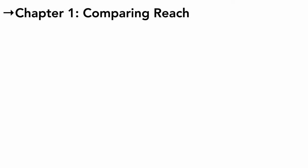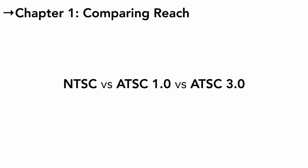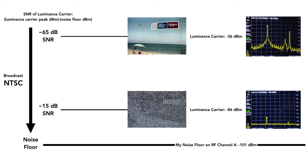Let's compare the reach of NTSC versus ATSC 1.0 versus ATSC 3.0. With NTSC, you get analog degradation. The video portion of a broadcast NTSC signal is modulated using amplitude modulation, which is more susceptible to interference than frequency modulation. While broadcast NTSC video turns to bright snow well above the noise floor, analog FM audio can last all the way to the noise floor before being consumed with static. This is one reason why audio could still sound decent when broadcast NTSC video was unwatchable, though this effect was largely reduced since the FM carrier was powered much lower than the luminance carrier.